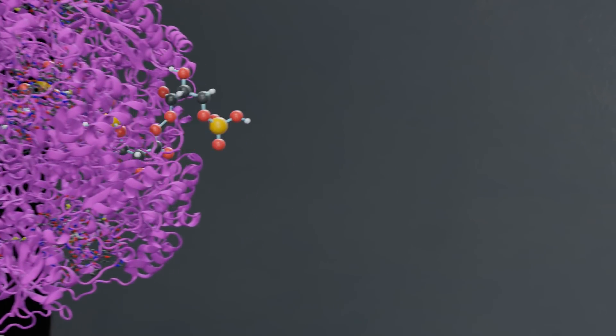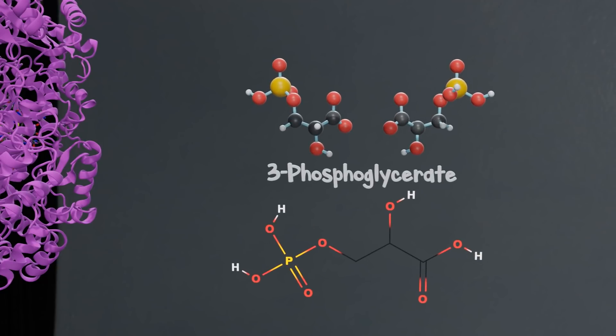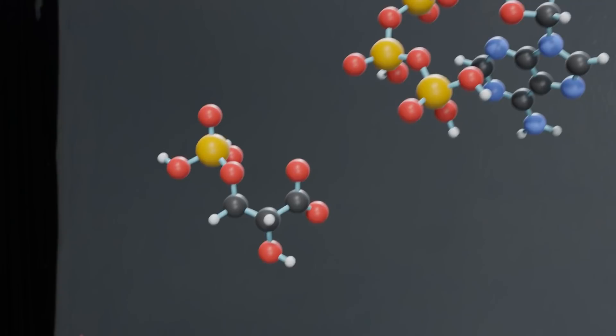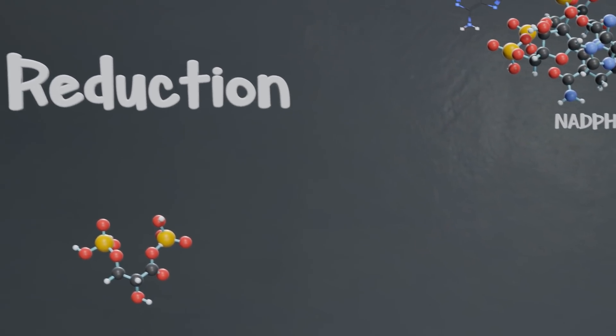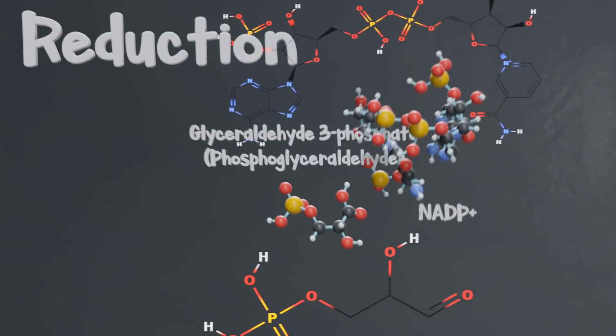Each one of these molecules reacts with ATP to create biphosphoglycerate. In reduction, each biphosphoglycerate is reduced by NADPH into glyceraldehyde-3-phosphate.